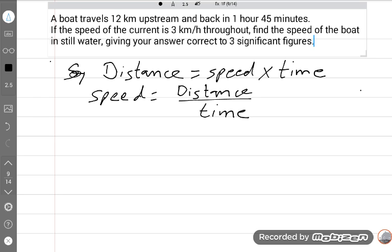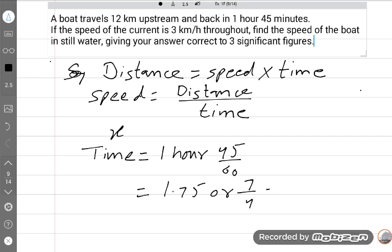Time should be in hours. One hour and 45 minutes - one hour is okay, and 45 minutes divided by 60 gives us hours. So time will be 1.75 or 7 upon 4 hours.